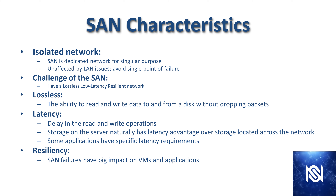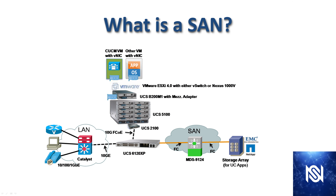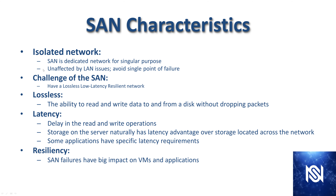SAN characteristics: the first is isolated network. The SAN is a dedicated network for a singular purpose. You can see in the picture that the LAN is over here, and the UCS servers all come through the fabric interconnect, which leads off into the SAN — its own separate infrastructure. It's really important that the SAN is its own infrastructure because then it's unaffected by LAN issues. If equipment goes down in the LAN, storage could go completely out, which is really bad. Applications and virtual machines behave very poorly if there's a failure in the storage.